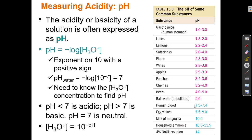Blood is generally a little bit basic, around 7.3 — a little bit higher than 7. Then eggs and milk, all the way up to a 4% sodium hydroxide solution, which is the kind of stuff in drain cleaner. So very basic.